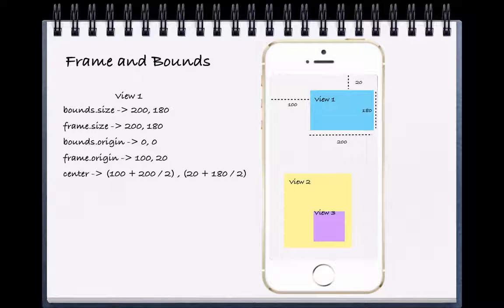An origin holds the X and Y coordinate of our object, and our size holds the width and the height of our object. So with these four pieces of information, we know how to draw our objects on the screen.